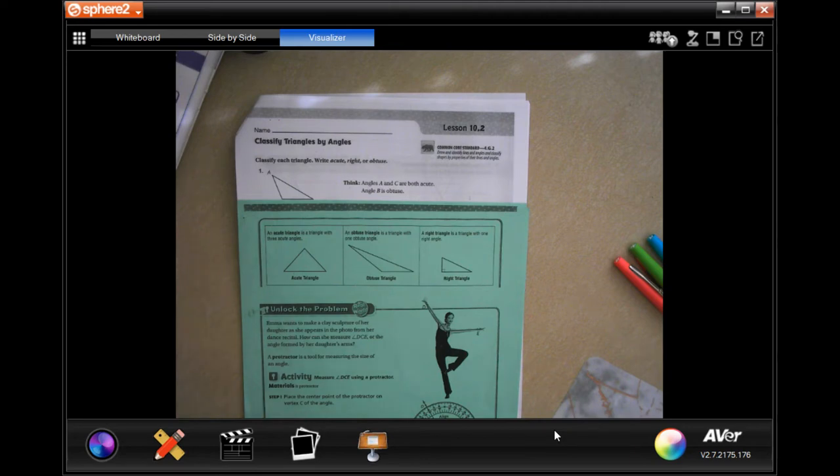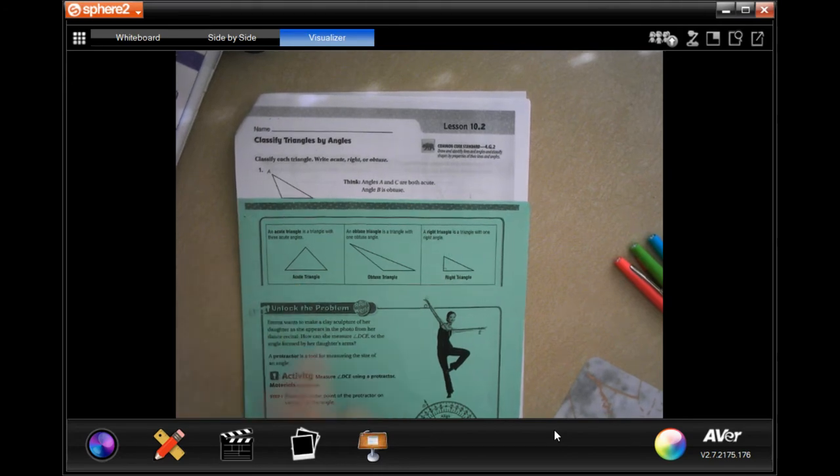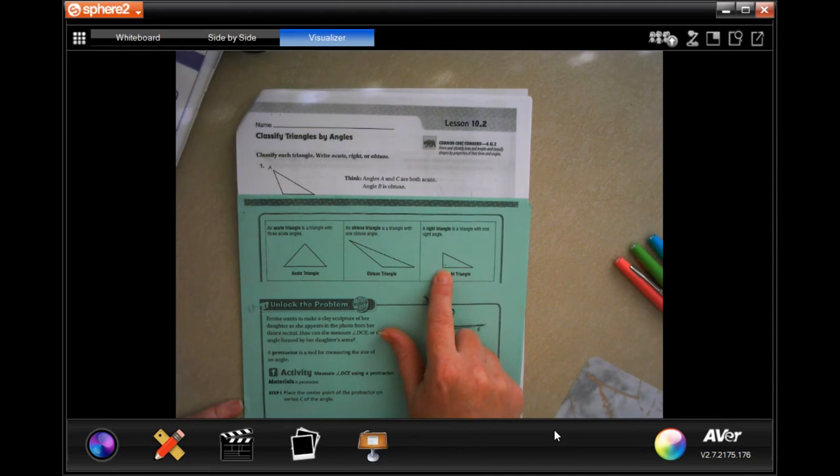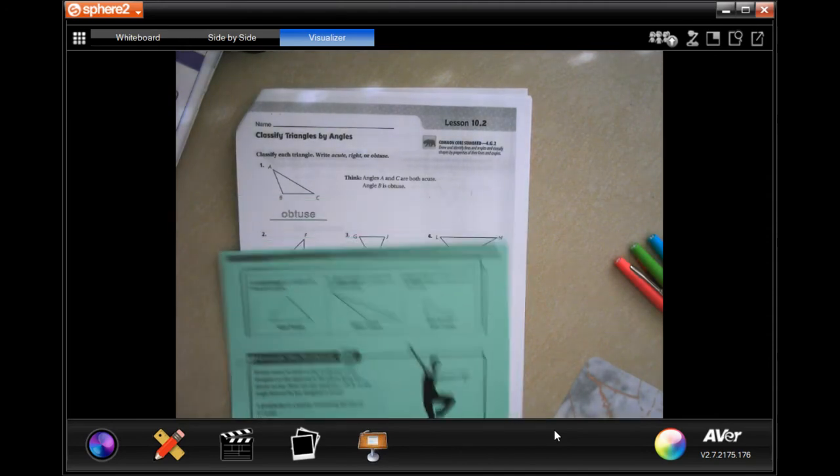Obtuse, I always think obnoxious where it's bigger and grander than anything that we actually need, so it's wider than 90 degrees, bigger than 90 degrees. And a right angle always has that itty bitty box in it every time.